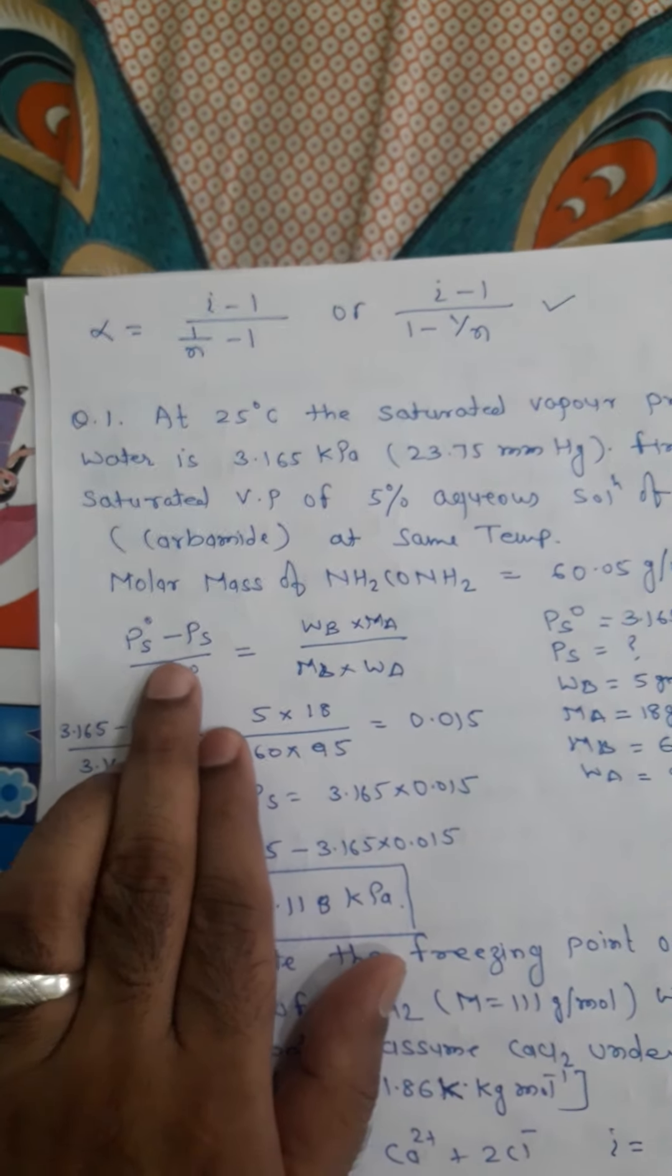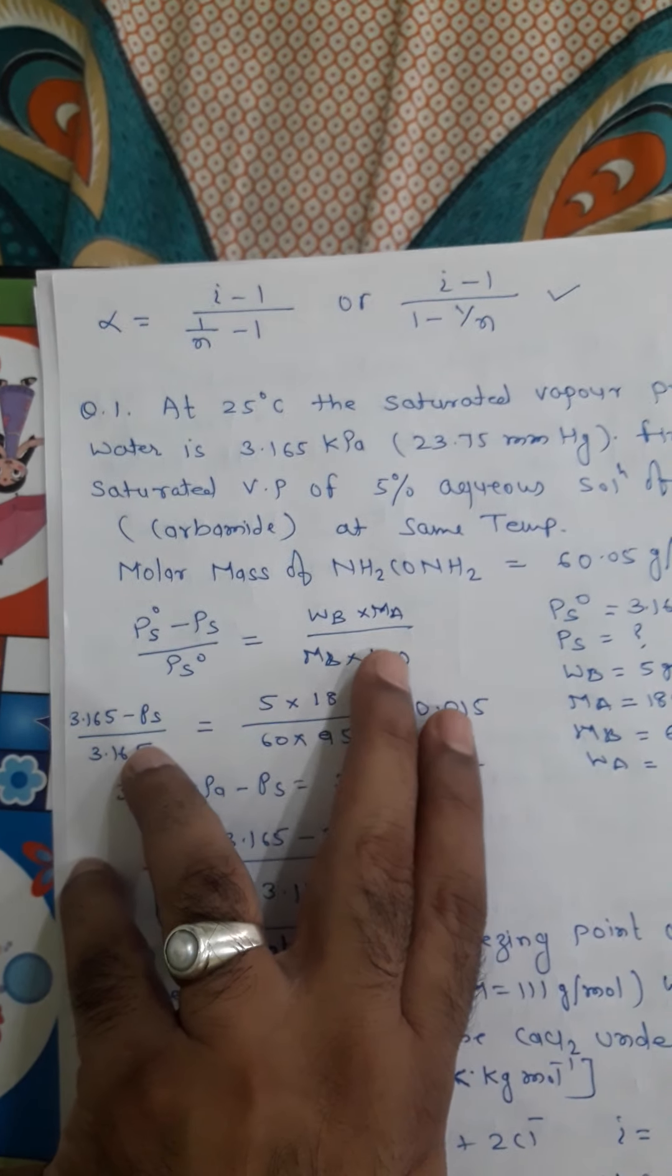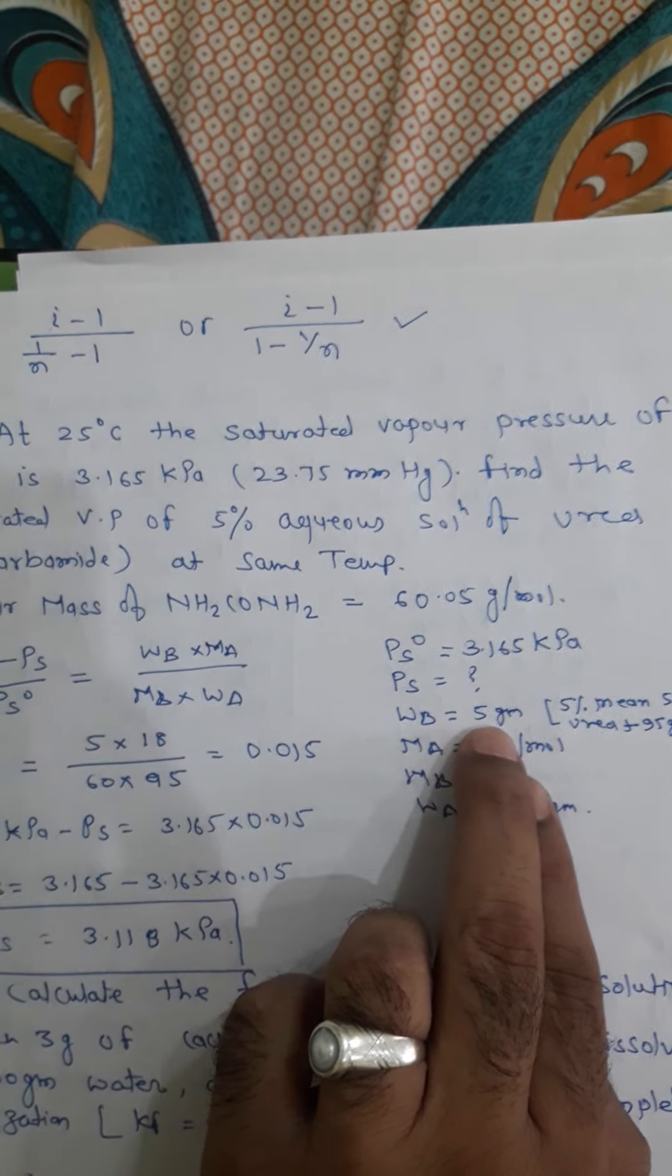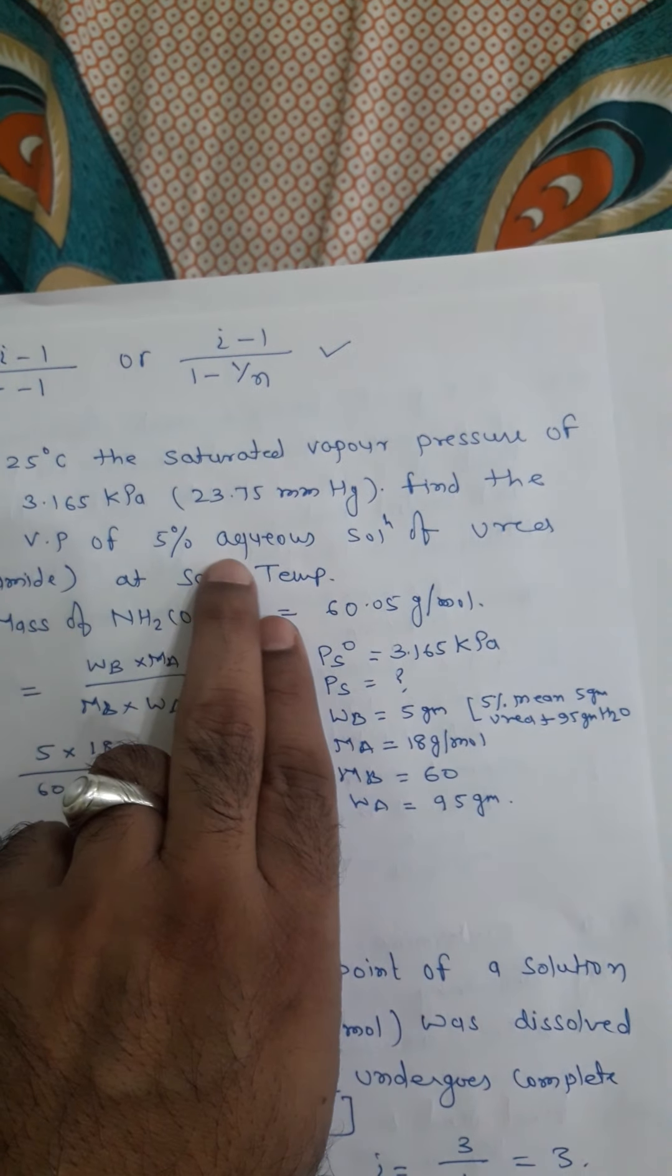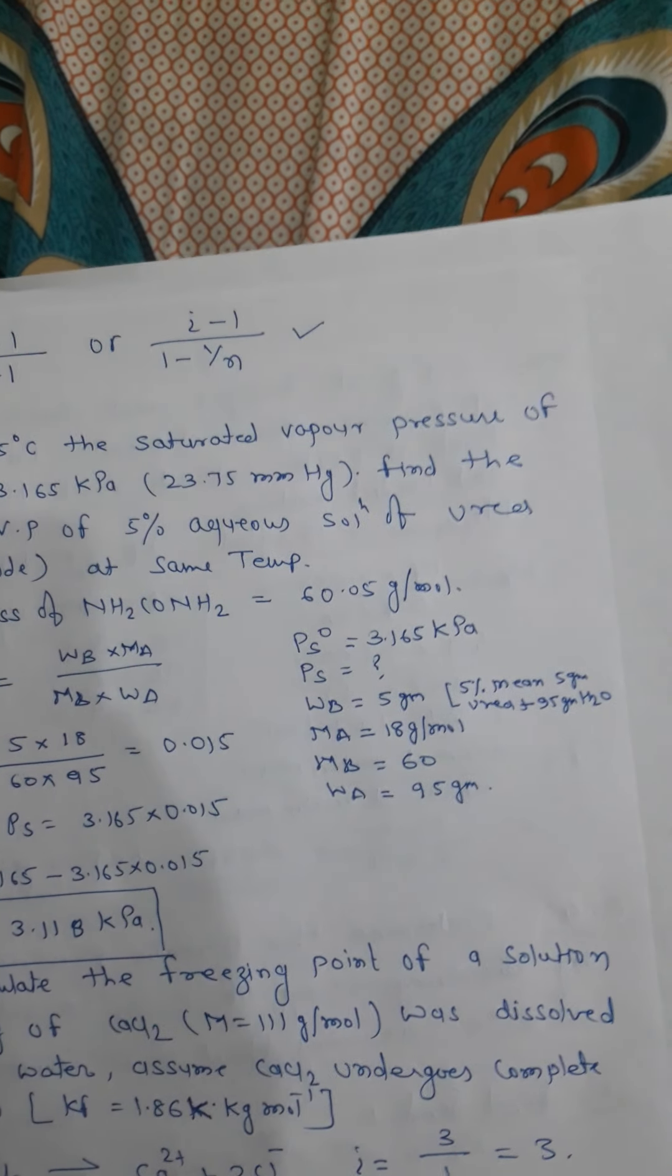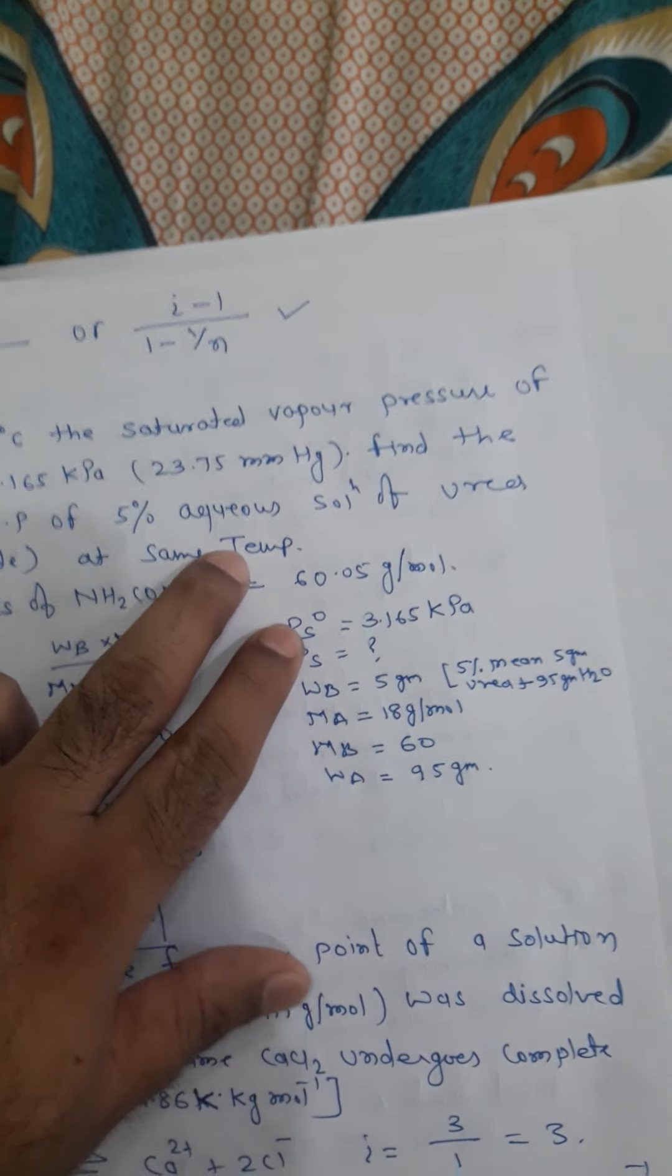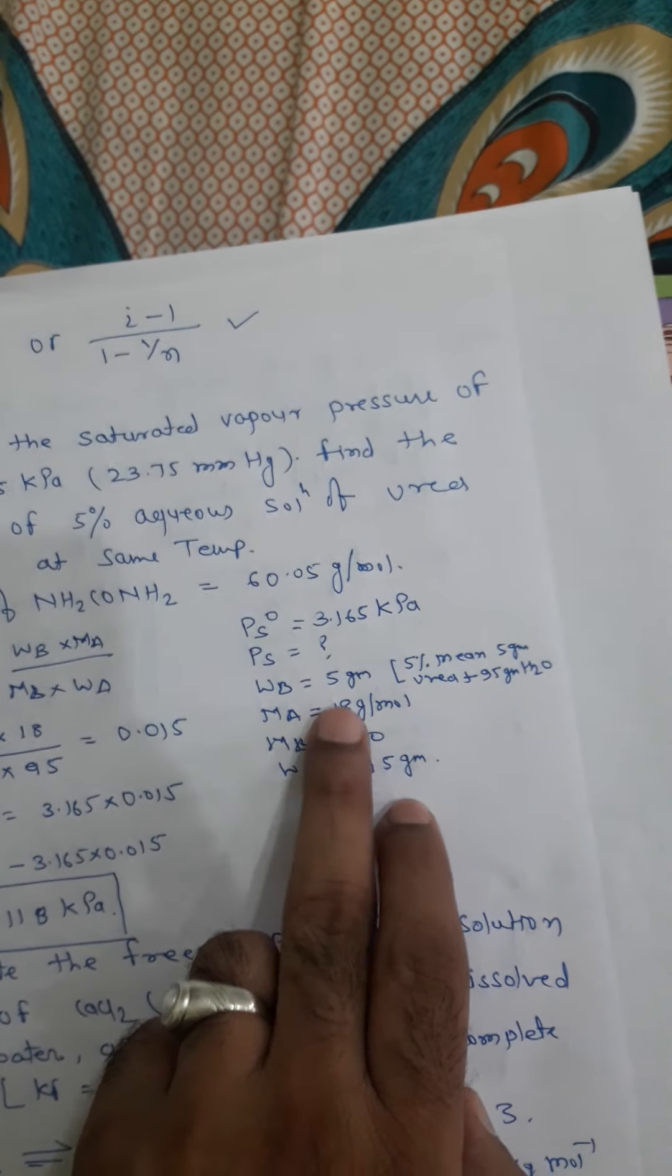When we will put the value of PS0, PS and PS0, WB, MA, MB and WA. Since WB is the gram weight of solute which is equal to 5 gram, it is given in the question. When 5 gram, 5 percent aqueous solution, MB, WB is 5 gram.